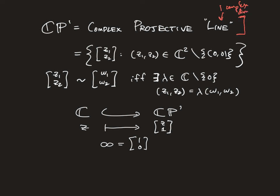And this consists of ordered pairs z1, z2, which are not 0, 0, under an equivalence relation. So I'll use these square brackets to indicate points under this equivalence relation where z1, z2 is equivalent to w1, w2 if this ordered pair z1, z2 is a multiple of w1, w2.